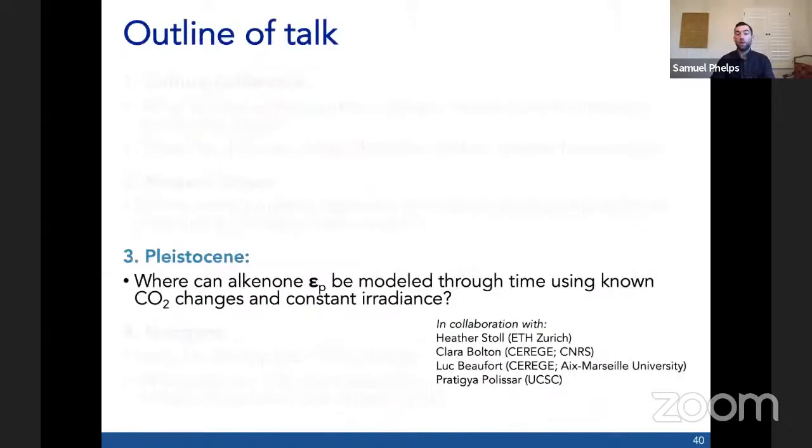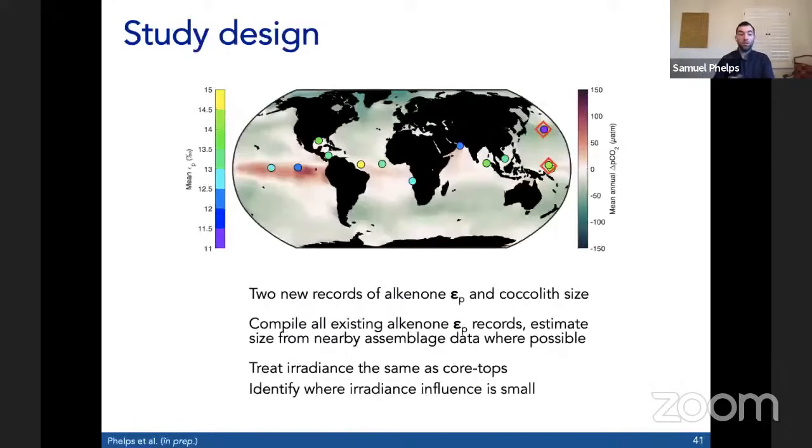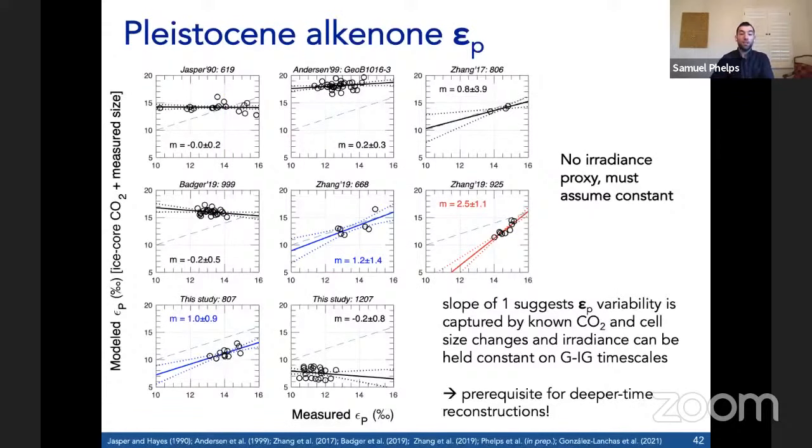Where can alkenone EP be modeled through time using known CO2 changes and constant irradiance? If irradiance is not stable in the Pleistocene, we really have no faith in it being stable in deeper time. If we can show that irradiance is relatively stable over the last 800,000 years in some sediment samples, that provides confidence for going deeper in time. To do this, we generated two new records of alkenone EP and calculate size, compiled and standardized existing alkenone EP records so they could be interpreted together, and we compare modeled to measured EP in all sites where size is known. Here I'm plotting locations where alkenone EP and calculate size are measured. At each location, EP is modeled using known variations in CO2 from the ice core record along with measured coccolith size to estimate cell size changes. Because we don't have a bonafide proxy for irradiance, we assume it is constant and treat it as constant in all records.